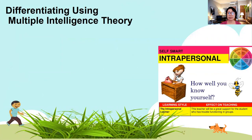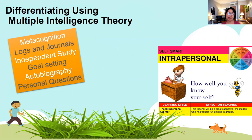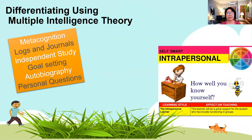Students with intrapersonal intelligence are the quiet students who prefer to study on their own and think independently. They don't work well in groups or pairs. You can give them activities like observation and journaling, independent study, formulating their own goals, working on an autobiography, and creating personal questions about the lesson and generating their own answers.